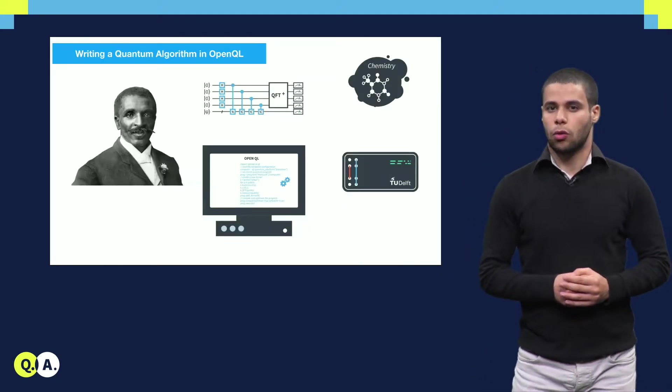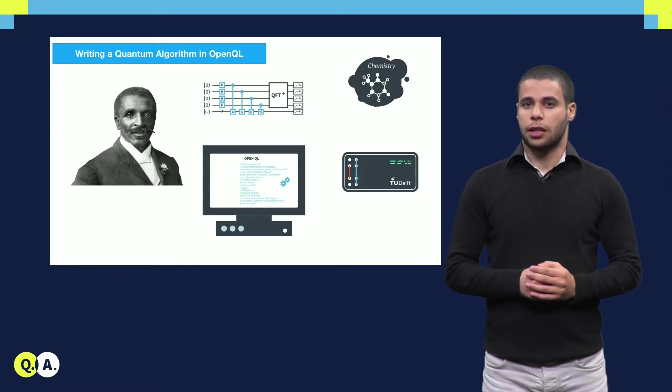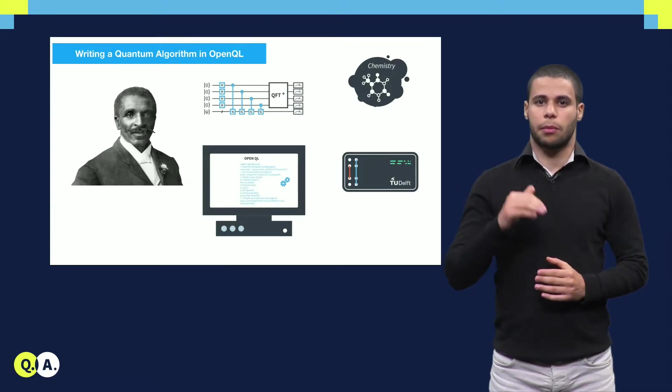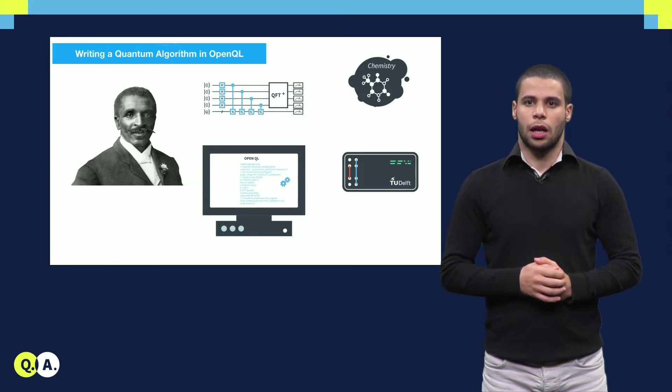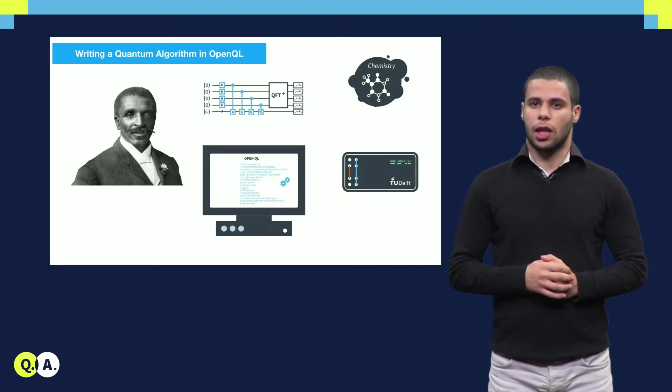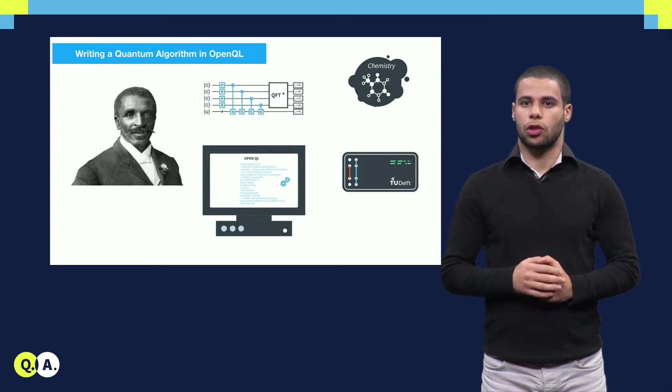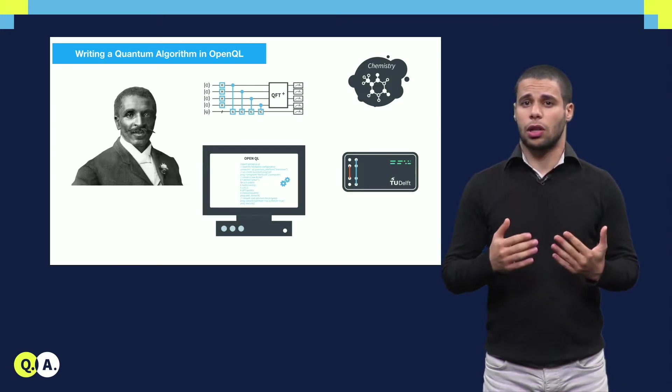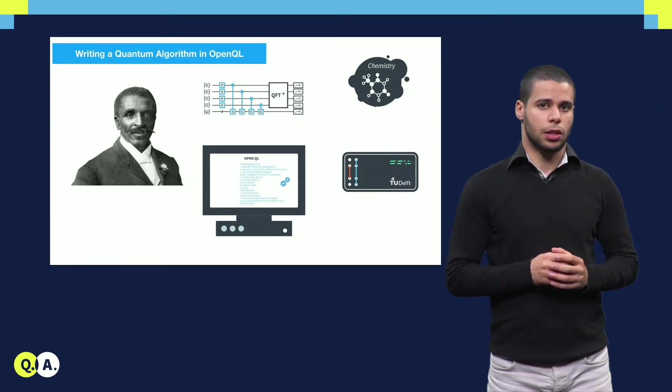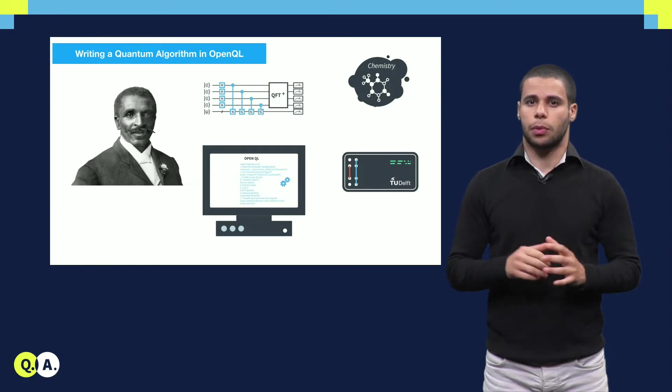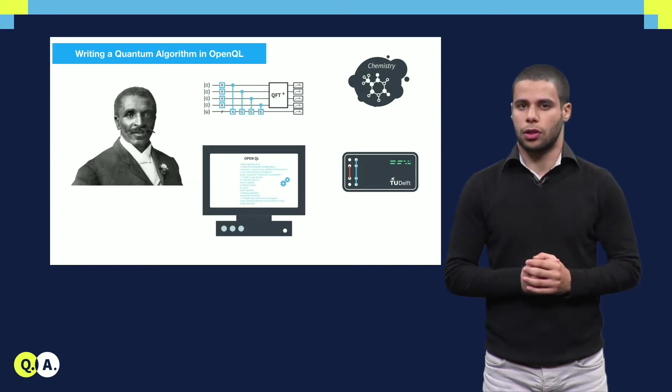We saw also how quantum algorithms can be expressed in a high-level programming language such as the OpenQL language designed at QuTech. In particular, we saw that those algorithms are composed of a mix of classical and quantum operations. The classical part can be executed on the traditional processor and the quantum part can be executed on the quantum processor.